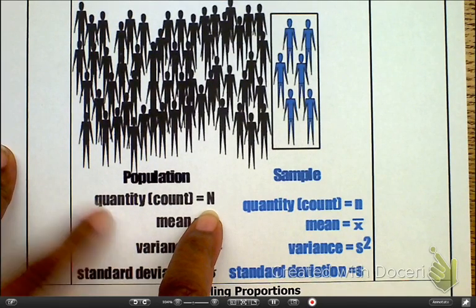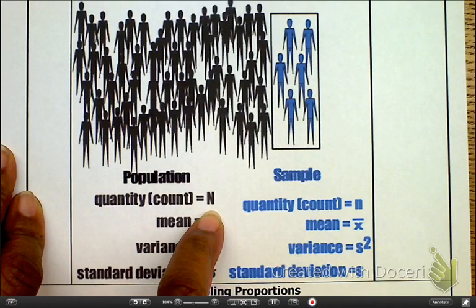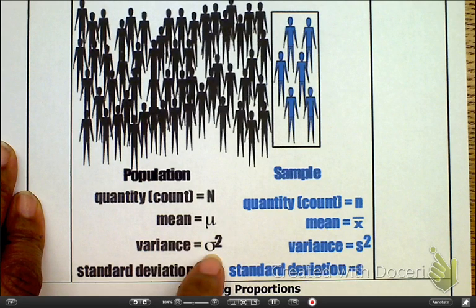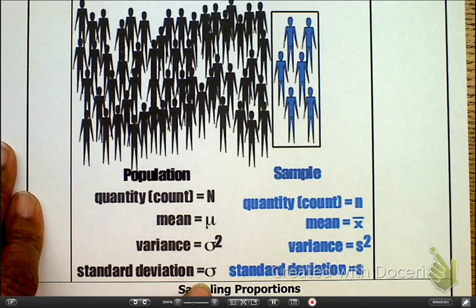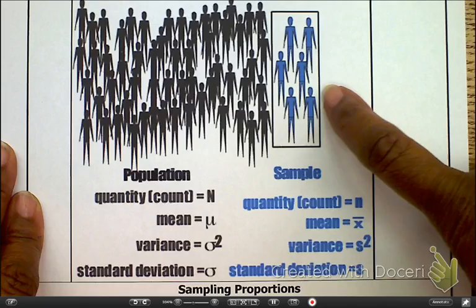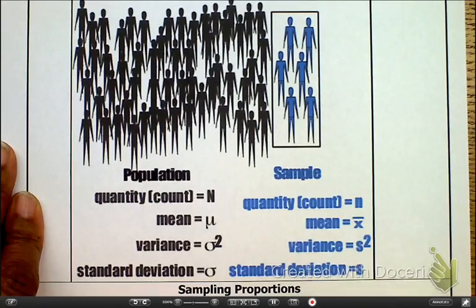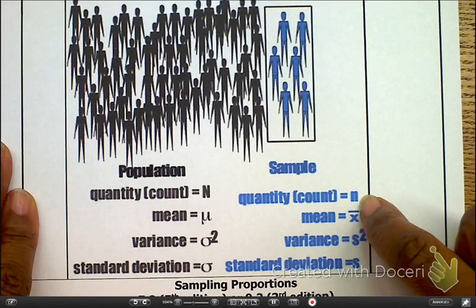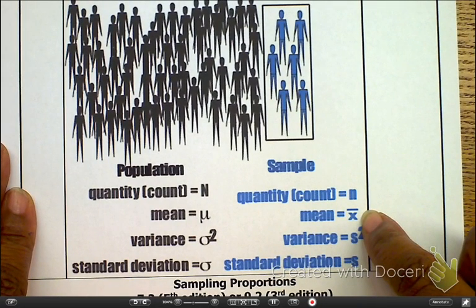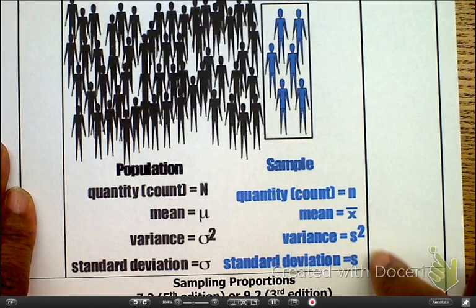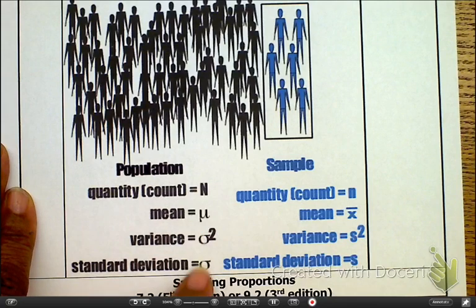Remember, here is our entire population. As we look at the population, that's the big picture. We use the letter N to represent the count for the population. Remember, we use our Greek. The mean is mu. The variance is going to be sigma squared and the standard deviation is sigma. Now, as we look at here, the little picture, taking the tree given the entire forest, here I have a sample. So we have a sample size, n, lowercase n. Our mean for the sample is x-bar. Our variance is s squared, and our standard deviation is s. So remember, in most cases, whenever we're dealing with the population, we're looking at our Greek.